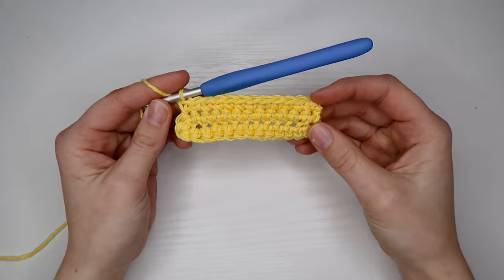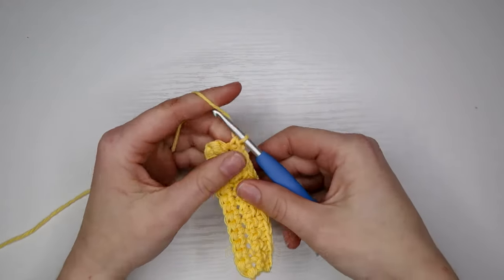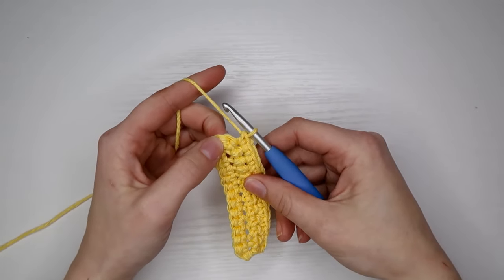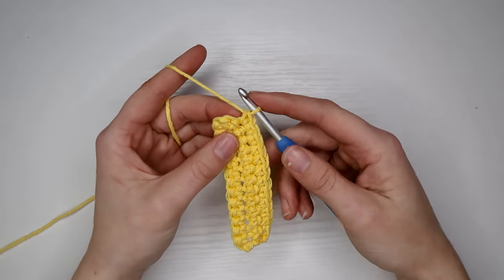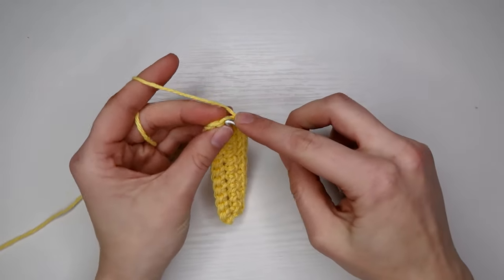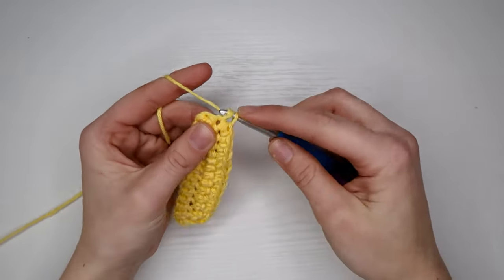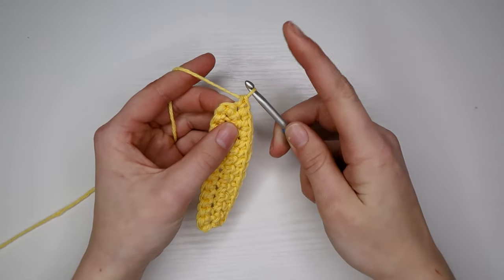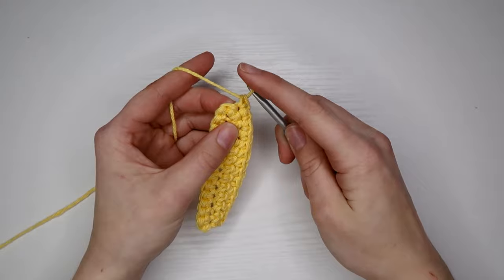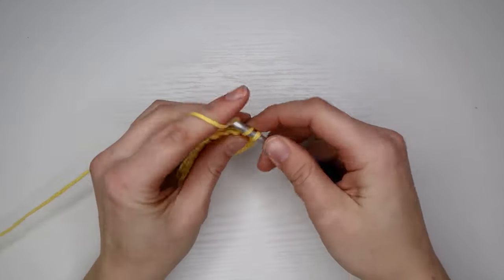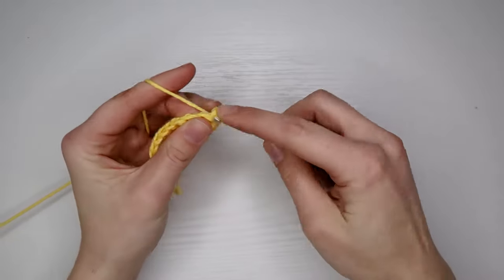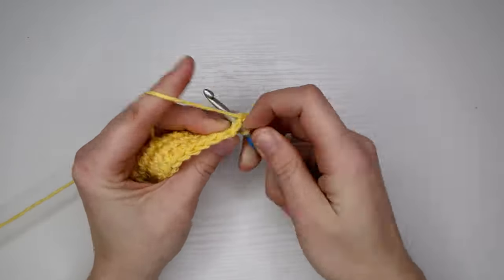I just crocheted all the way up that side and what I have right here is those three single crochets that we did in the top stitch on our main chain. So what I'm going to do is place a single crochet in the first one. Then I'm going to place three single crochets right in that middle stitch from before. One, two, and three.